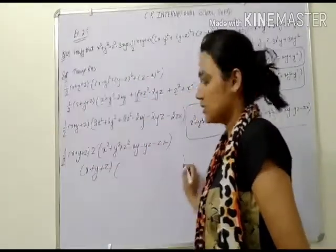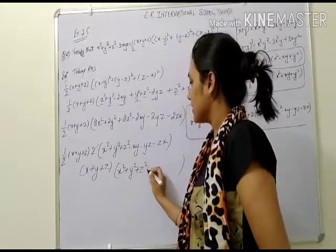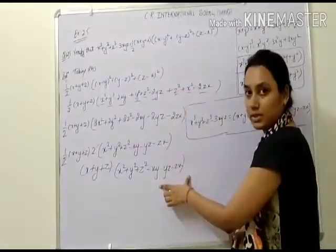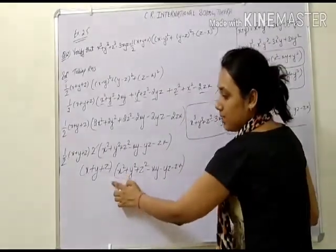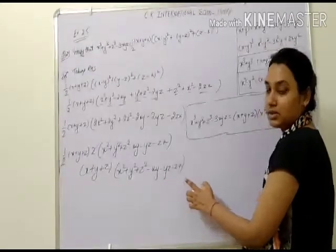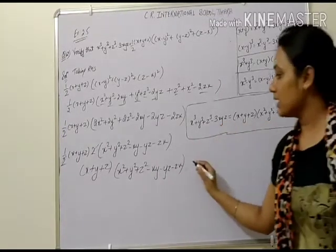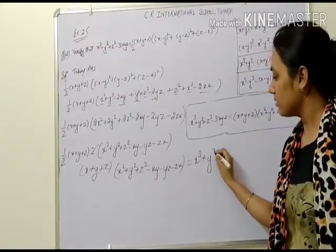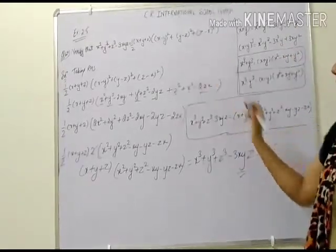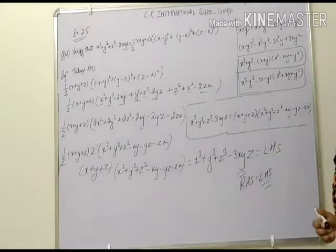So we get x plus y plus z, into x squared plus y squared plus z squared minus xy minus yz minus zx. This matches the formula x cubed plus y cubed plus z cubed minus 3xyz. So RHS equals LHS. Hence verified.